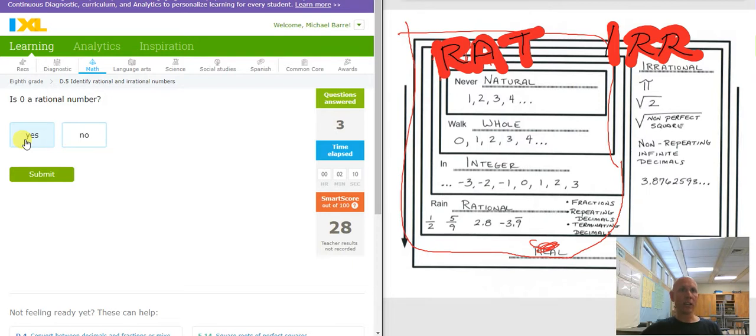So is zero rational? It's over here, yes, it's a rational number, continue. Square root of three is irrational, square root of a non-perfect square, is that irrational? Yes. That is rational. It's rational, so this is wrong, no.